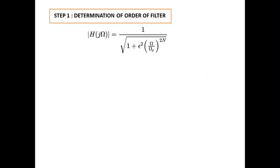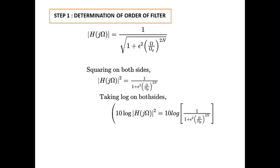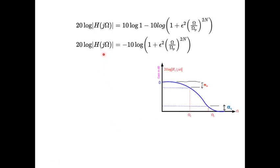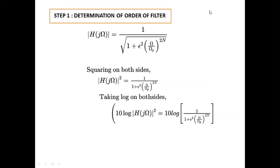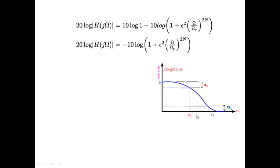The first step is determination of the order of the filter. The magnitude response of the Butterworth filter is given by |H(jω)|, and we perform certain mathematical calculations to derive n. Squaring both sides removes the square root. Taking 10·log on both sides gives 20·log|H(jω)| = 10·log(1) − 10·log(denominator). Since log(1) = 0, we obtain the expression on the right.